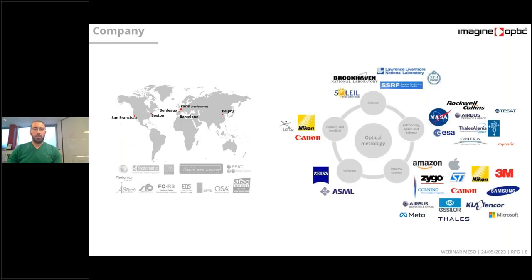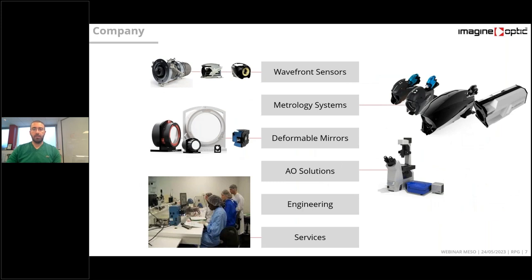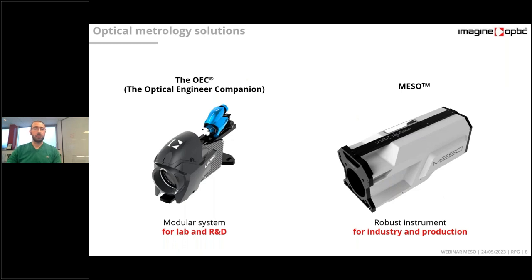This is a quick overview of our clients, main clients worldwide. And this is a brief overview of the products of Imagine Optic. As you can see, the wavefront sensors, the metrology systems, the deformable mirrors and adaptive optics solutions. We provide also engineering and support services for our clients. Today we're going to discuss mainly metrology systems. Imagine Optic has two types of metrology systems. One is designed for labs and R&D. And the new one, which is MESO, designed for industry and production, to be at the bottom of the production line.